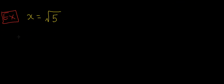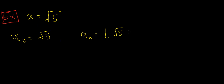First of all, I've got to find x₀. x₀ is just going to be equal to root 5 because I set that equal to x. And what's a₀? a₀ is going to be equal to the floor of root 5. I know that root 5 is somewhere between 2 and 3 — it's a little bit above 2 — so this is going to be 2.